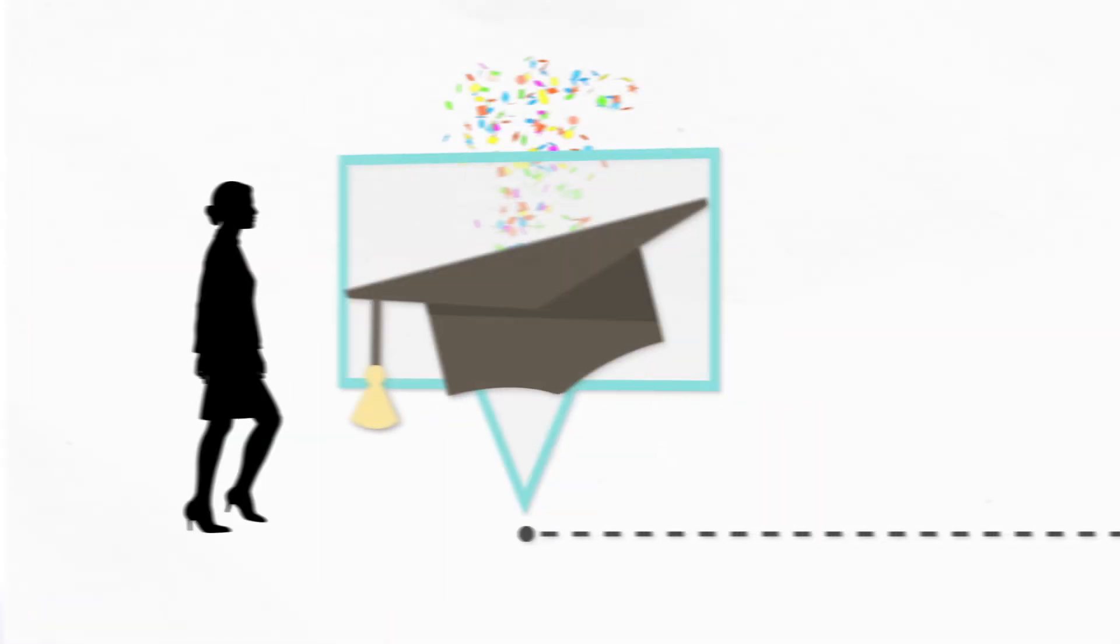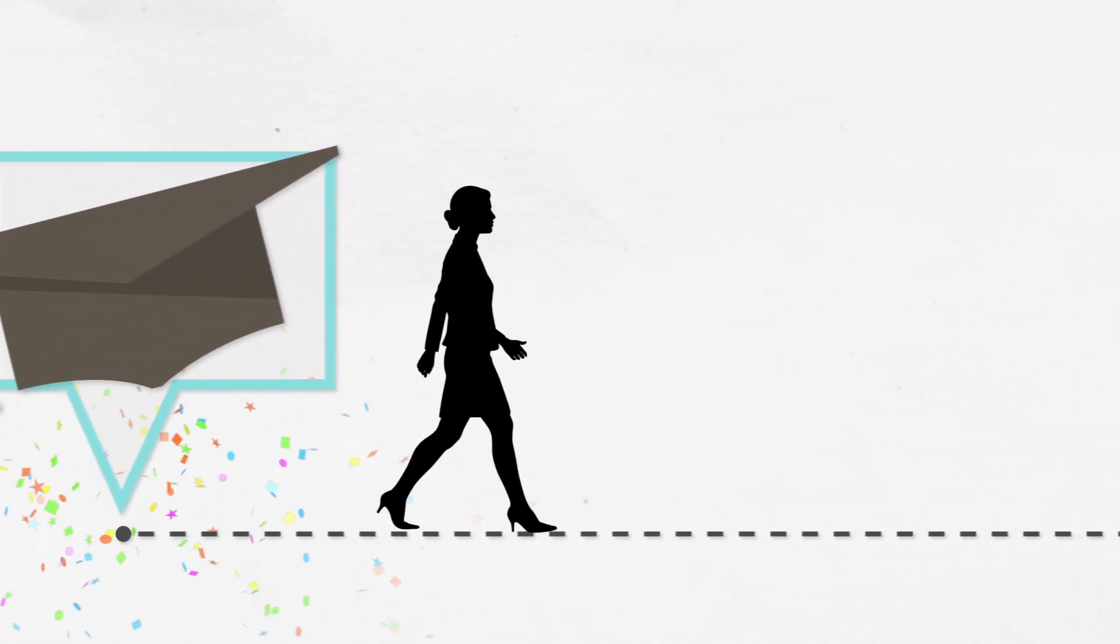Frictional unemployment is short-term unemployment caused by the ordinary difficulties of matching employee to employer. The moment a student graduates, for example, and starts to look for work, they're officially unemployed.